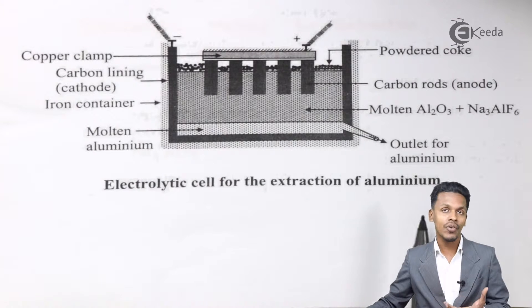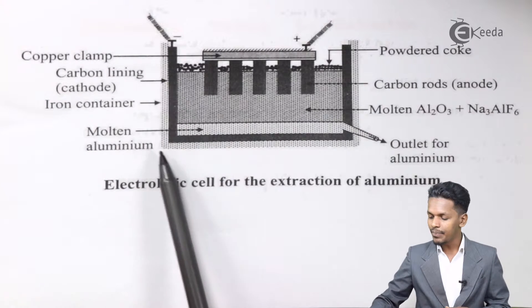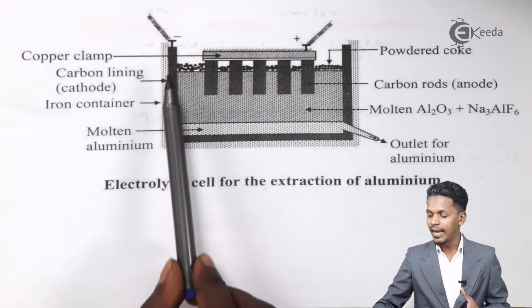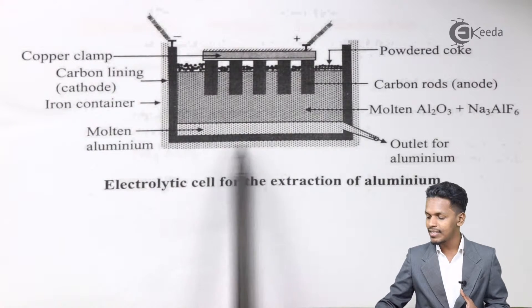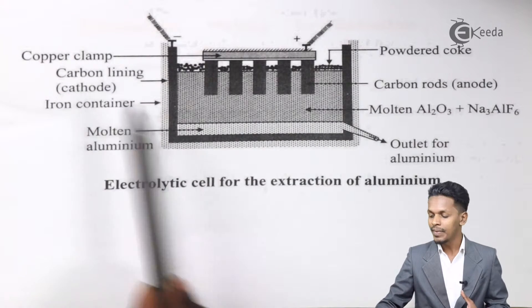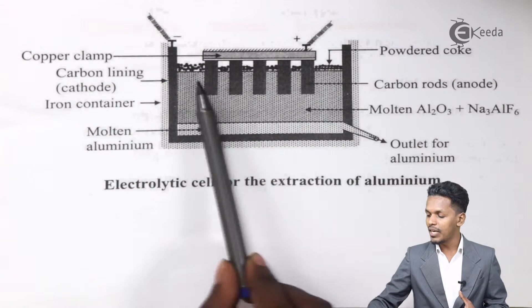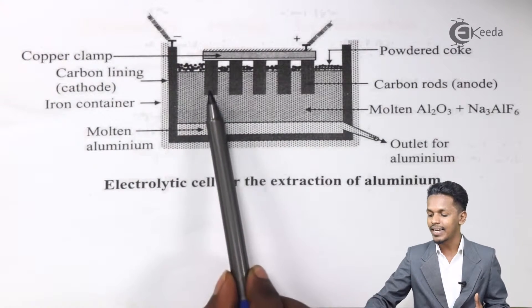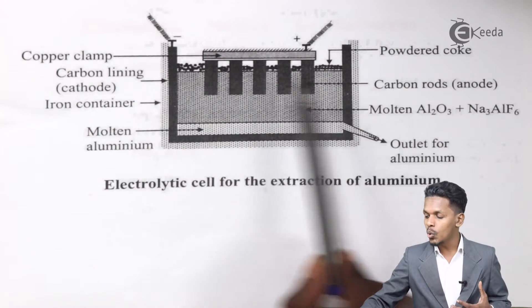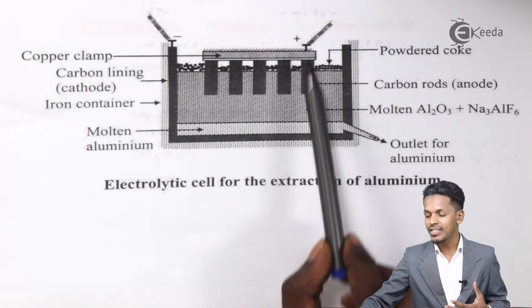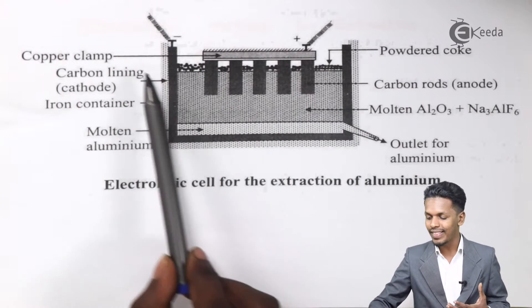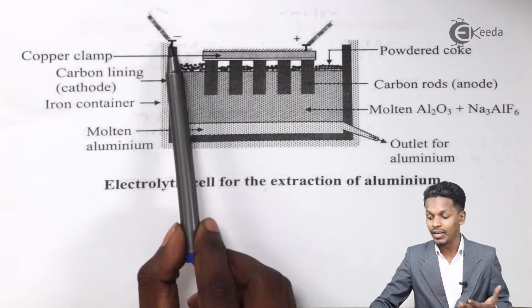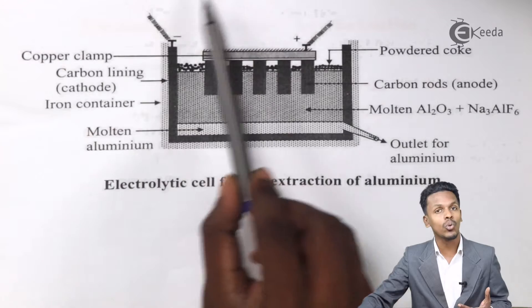We have a diagram here of an electrolytic cell for the extraction of aluminum. This is basically a container which is made up of iron, in which a carbon lining is also present, which is acting like a cathode. Multiple rods are there, even they are made up of carbon, so therefore they are acting like anodes. This is a copper clamp that connects all those anodes, giving them a positive charge, while the carbon lining acquires a negative charge. These two are connected to an external source.